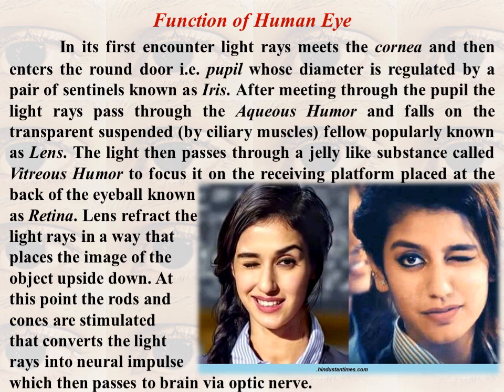In the first encounter, light rays meet the cornea, then enter the round door we call the pupil. The diameter of the pupil is regulated by the iris. After passing through the pupil, the light rays pass through the aqueous humor and fall on the transparent suspended fellow waiting there — the lens, which is suspended by the ciliary muscles.